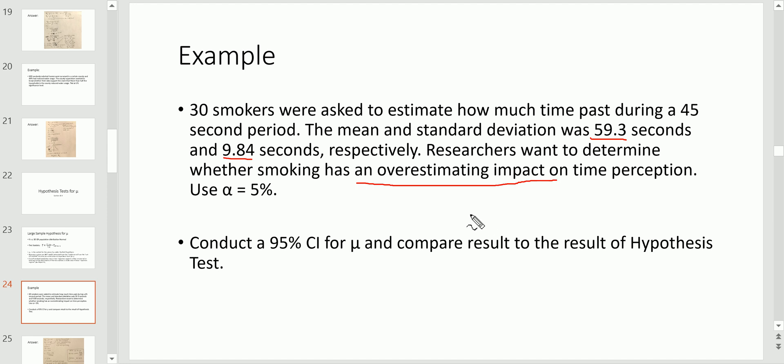The researchers were asked to determine whether smoking caused an overestimating impact on time perception. Overestimating you got to think for a second when it comes to time means that you think more time passed than actually passed. Since the actual amount of time is 45 seconds, we're basically asking the question: is smoking causing your time perception to be greater than 45? This is sample data and you always got to be careful when you use sample data to make any kind of decisions because it's partial information. Nevertheless you go through the process of the hypothesis test even though the results look pretty promising.